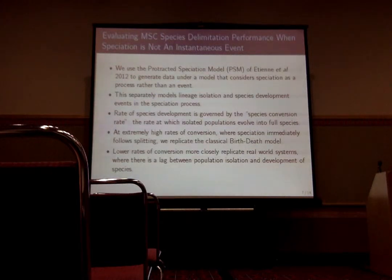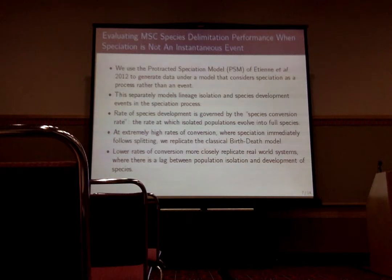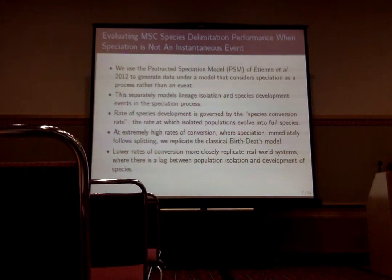We generated data under a protracted speciation model — a model that decouples the splitting from the speciation process. It's like the birth-death model with a speciation process laid on top, controlled by a conversion rate parameter. At low rates of conversion, speciation occurs much later than the splitting event. At high rates of conversion, speciation occurs very close to the splitting event. At really high conversion rates, it converges onto a birth-death model where speciation is instantaneous and coincident with the splitting event.